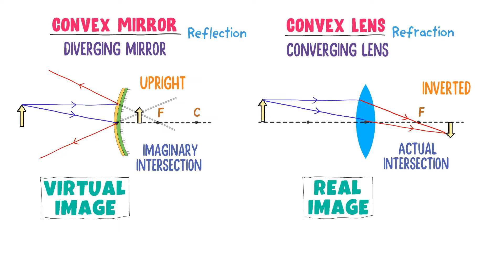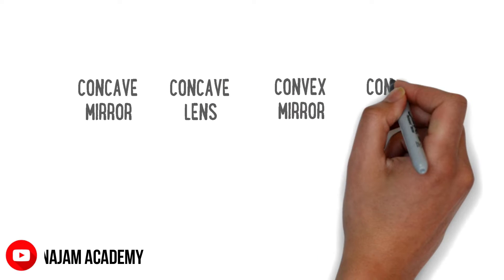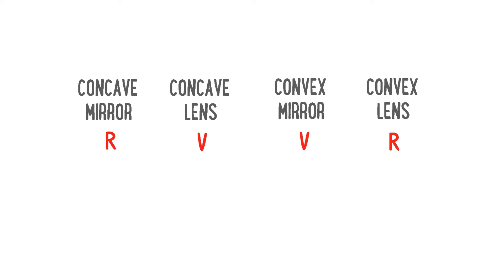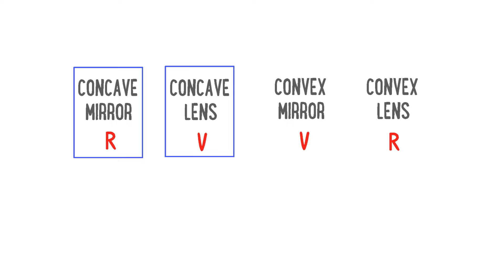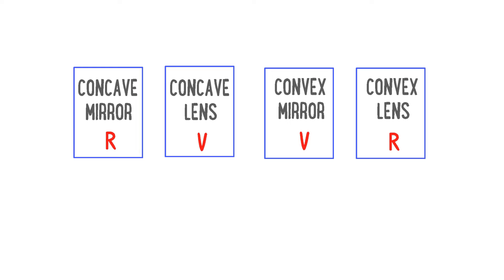To summarize: I write concave mirror, concave lens, convex mirror, convex lens — and the mnemonic RVVR. It means that concave mirror forms a real image, concave lens forms a virtual image, convex mirror forms a virtual image, and convex lens forms a real image. I hope that you have learned all about real and virtual images.